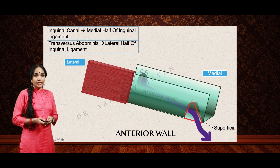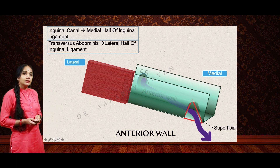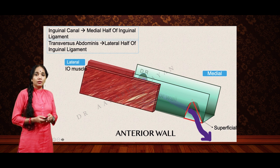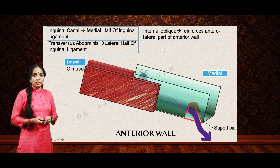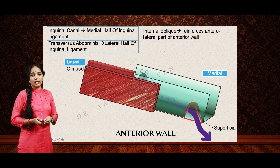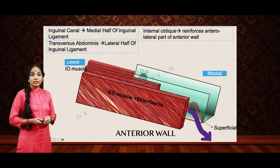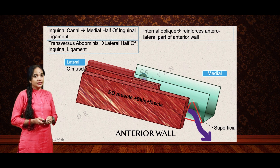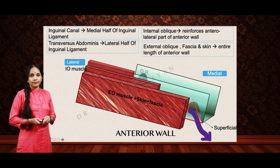The internal oblique attaches to the lateral two-thirds, so some of it extends on to the anterolateral part of the anterior wall. But the muscle extending throughout the entire length of the anterior wall is the external oblique muscle, with its defect covered by skin and fascia. So the anterior wall is mainly formed by the internal oblique, the external oblique along its entire length, and the skin and fascia.